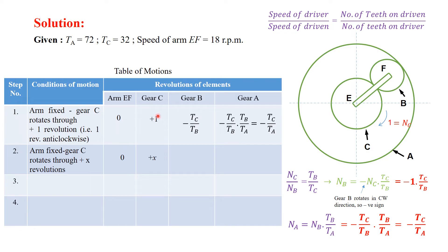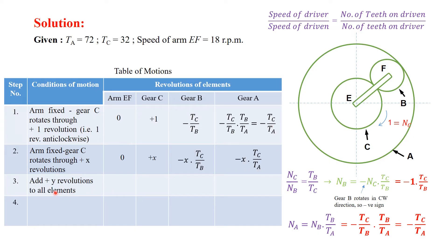In Step 2, arm EF remains zero. For gear C it is +x. We simply multiply the x value onto all gears: for one revolution the values are as calculated, so for x revolutions we get −x(Tc / Tb) for gear B and −x(Tc / Ta) for gear A. In Step 3, we add plus y revolutions to all elements.